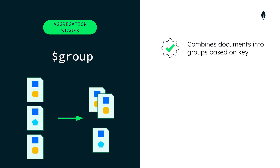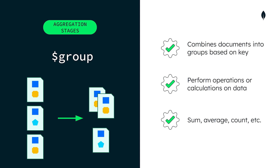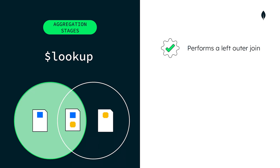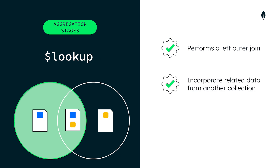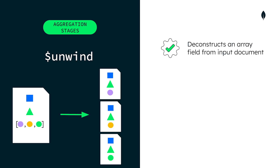The group stage combines documents into groups based on a group key. This stage is useful when you need to perform operations or calculations such as sum, average, or count on the grouped data. The lookup stage performs a left outer join to incorporate related data from another collection into the documents, similar to a left outer SQL join. The unwind stage deconstructs an array field from the input documents, outputting a document for each element of the array — in other words, it flattens the array.